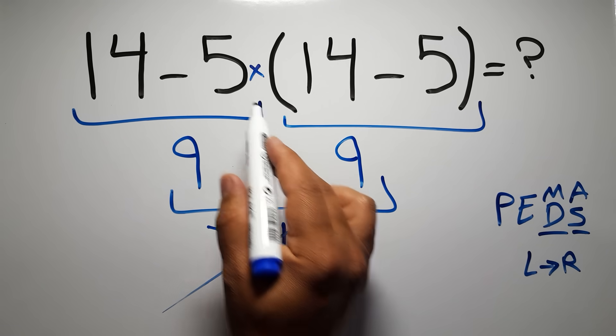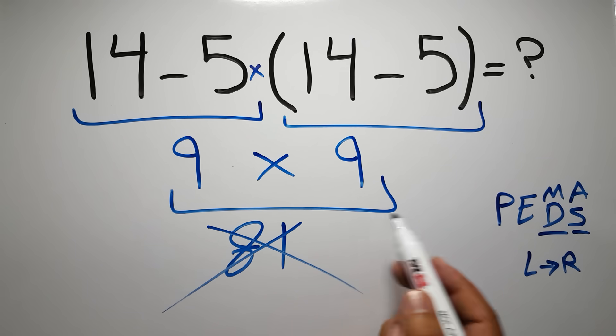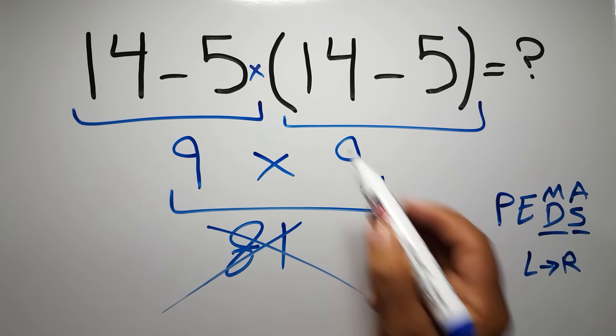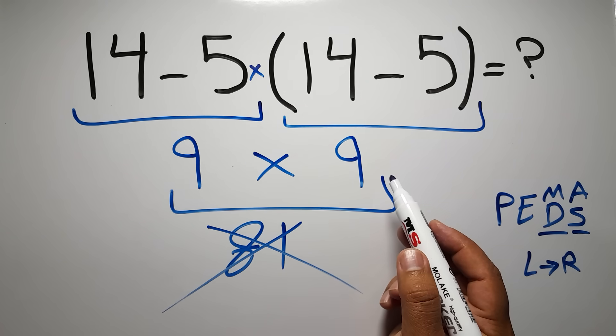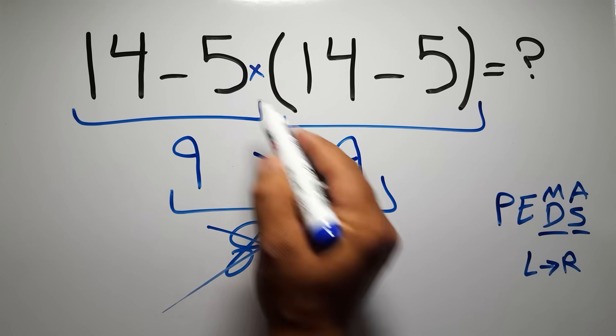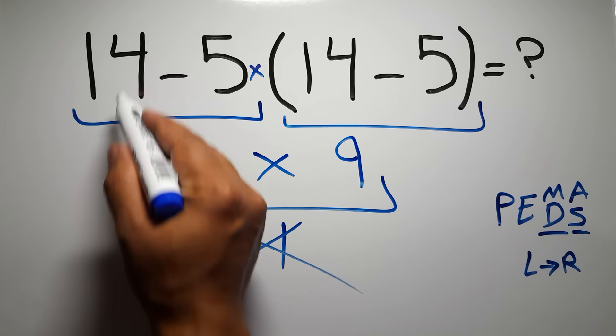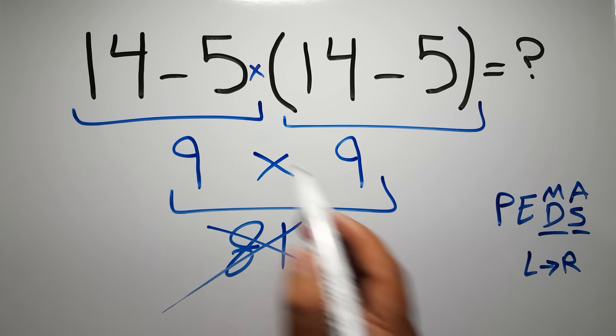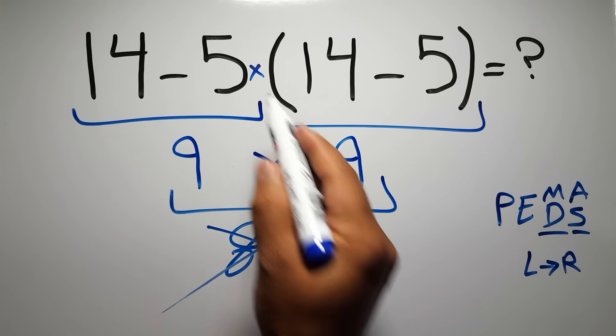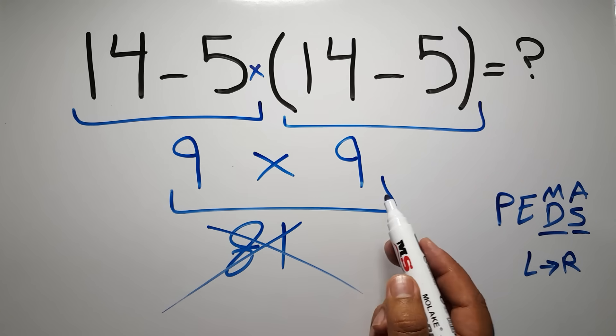So according to PEMDAS, first we have to do this parentheses, then this multiplication, and finally this subtraction. If we do this subtraction before this multiplication or this parentheses, it is wrong.